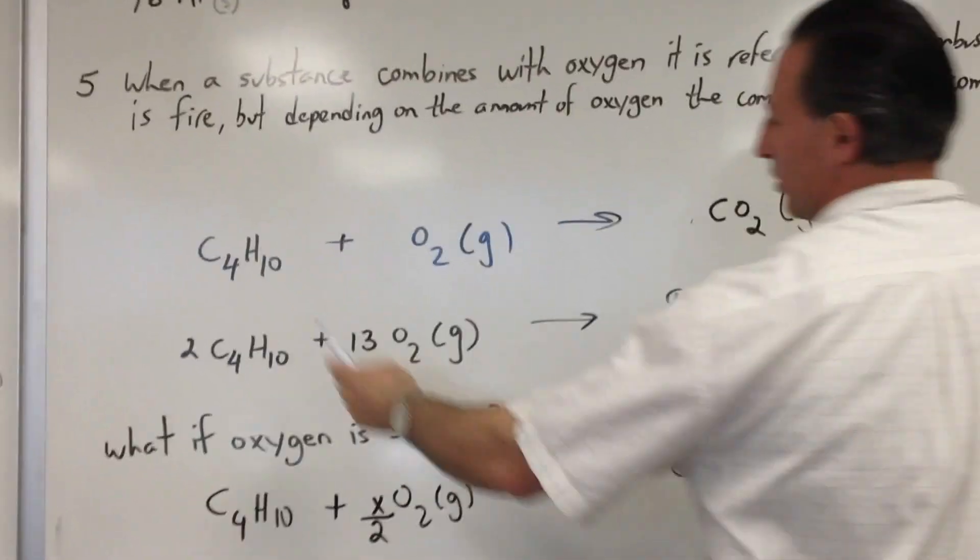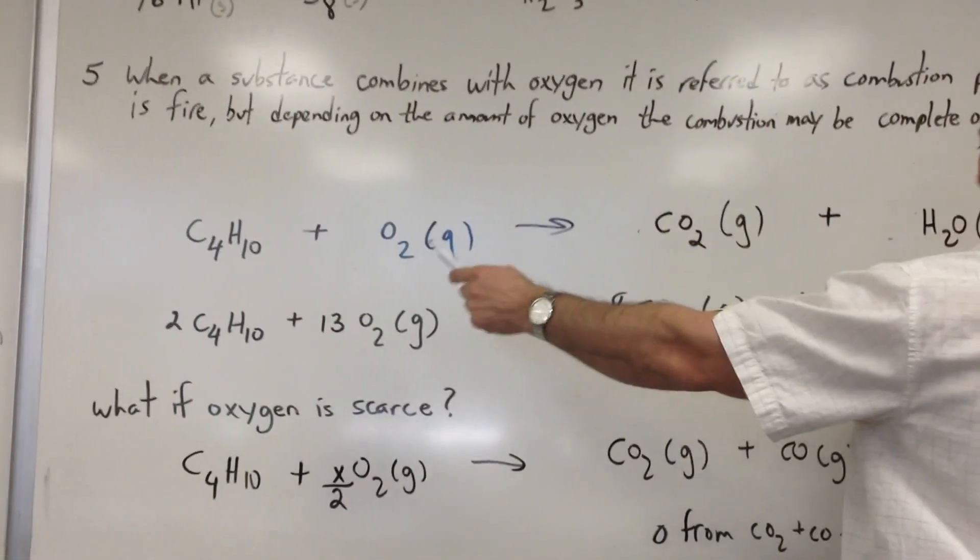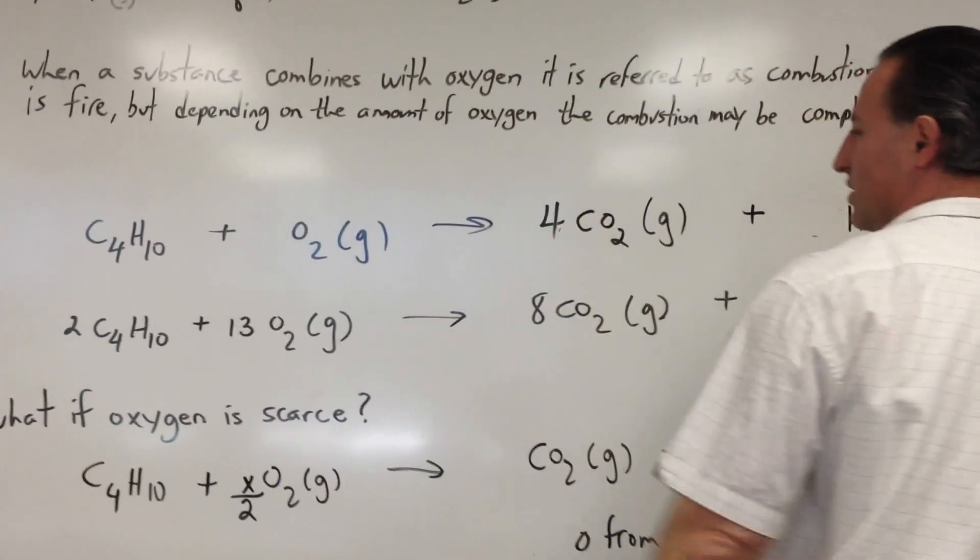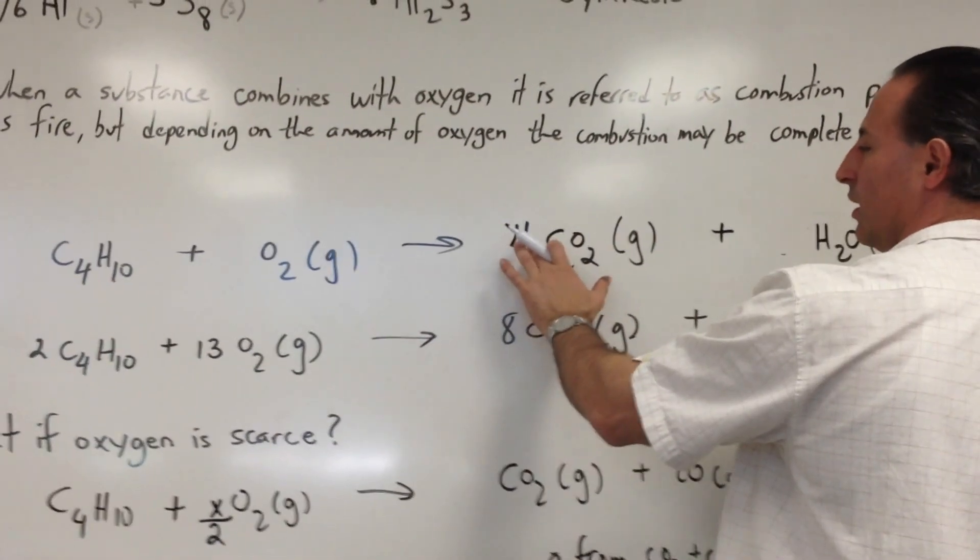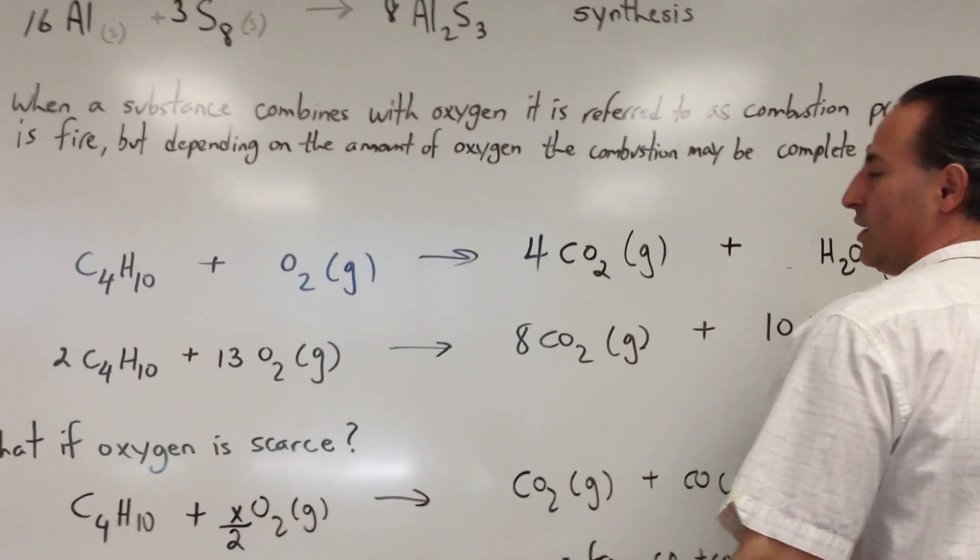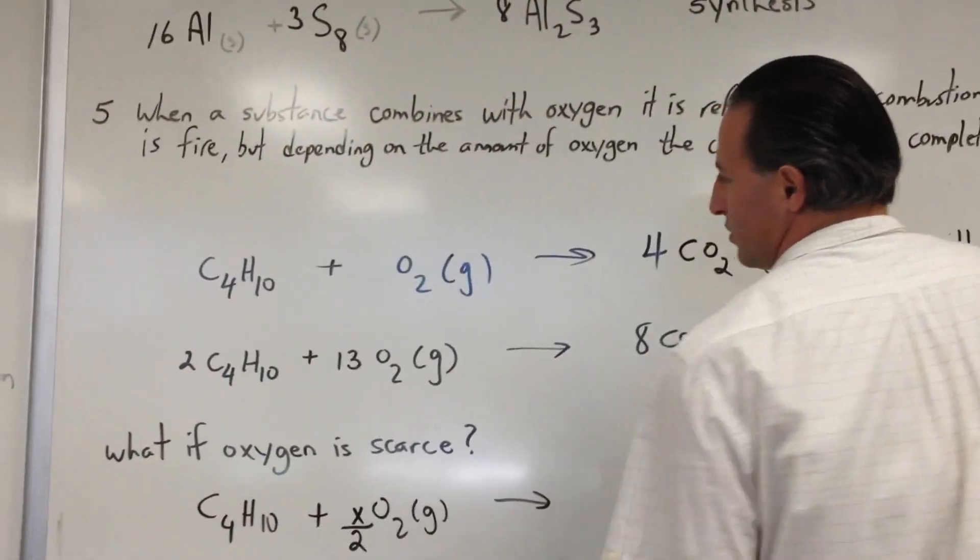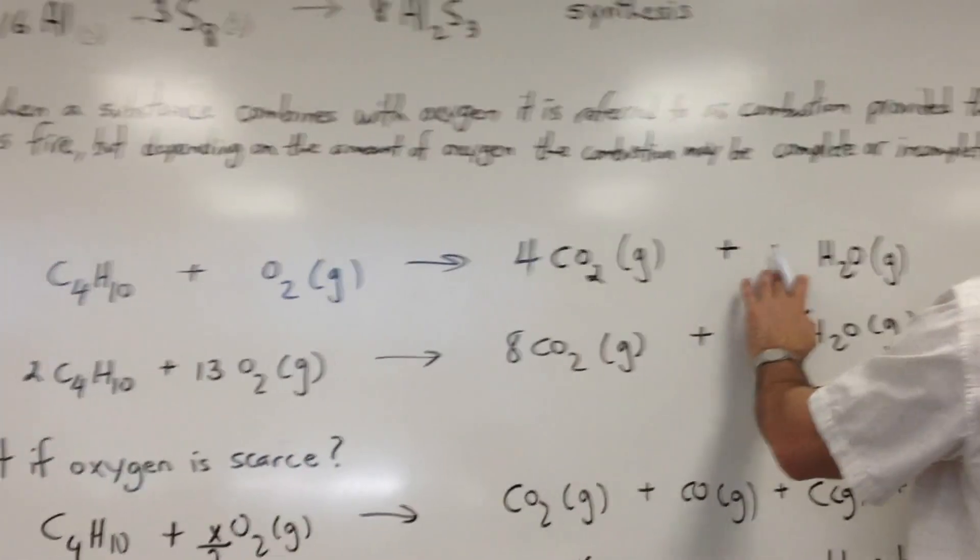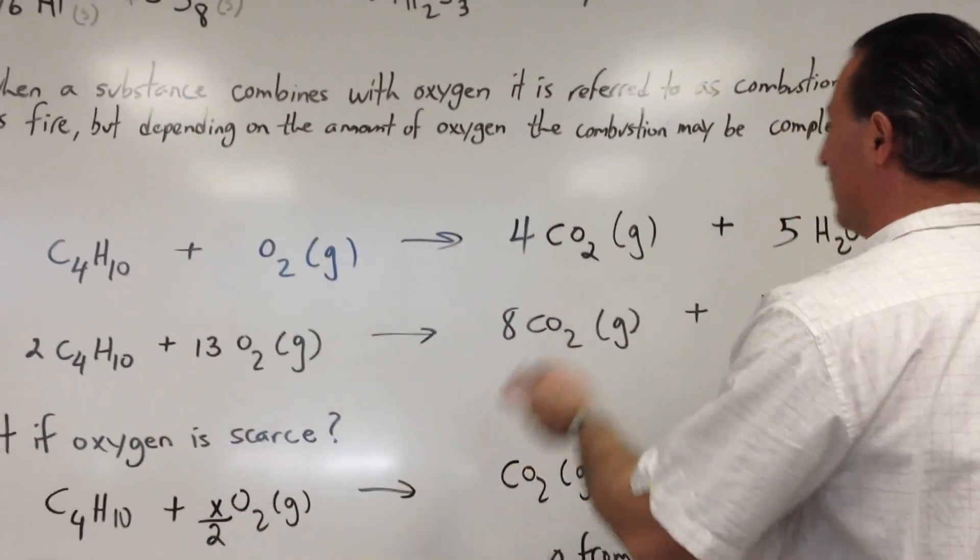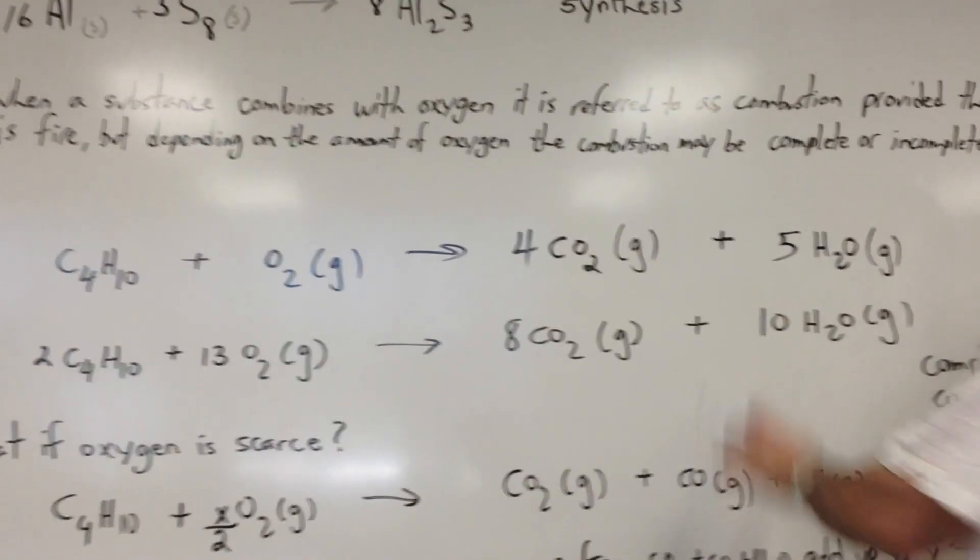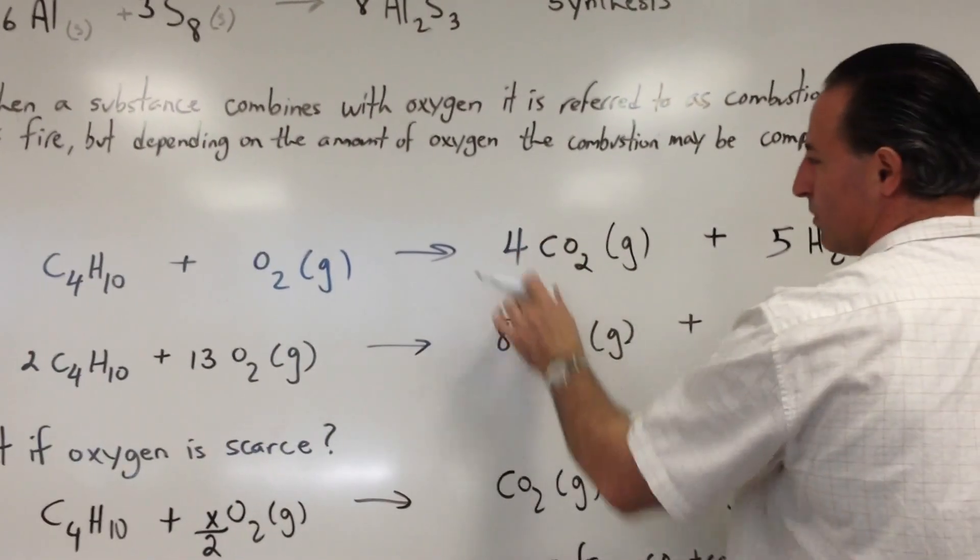I said, well, there are four carbon atoms from butane, so we're going to write a four in front of the CO2, because the only thing that contains carbon on the right side is carbon dioxide. Then we see that there are ten hydrogen atoms in butane. So we're going to put a five in front of water because the only hydrogen that appears on the right side appears in the form of water. So we have our ten hydrogens here, our four carbons there.